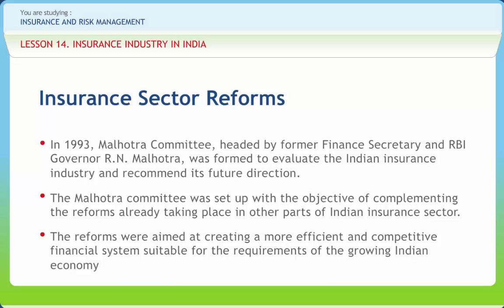Private companies with a minimum paid-up capital of rupees 1 billion should be allowed to enter the industry. No company should deal in both life and general insurance through a single entity. The insurance act should be changed and an insurance regulatory body should be set up. Mandatory investments of LIC's life fund in government securities to be reduced from 75% to 50%, and LIC should pay interest on delays in payment of claims beyond 30 days. The Malhotra Committee emphasized that the industry should be opened up to competition to improve customer services and increase insurance coverage.